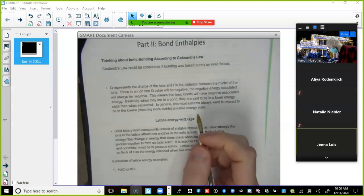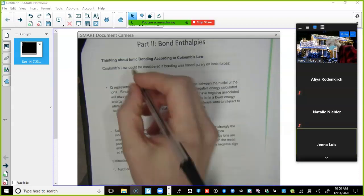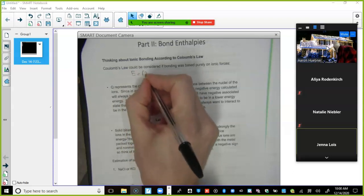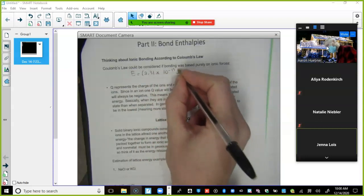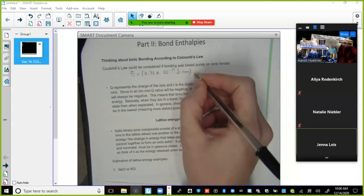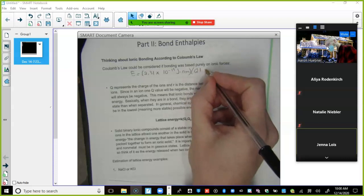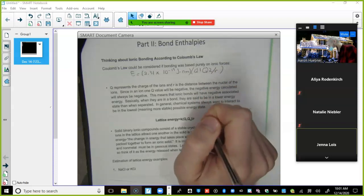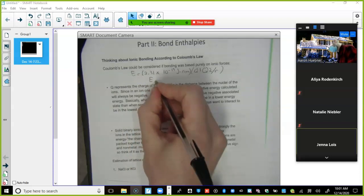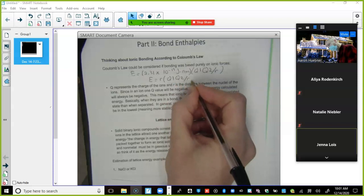So, writing this down. Coulomb's law could be considered if bonding was based purely on ionic forces. So we got energy equals 2.31 times 10 to the negative 19, and that's joules times nanometers. So that's our constant. We got Q1 times Q2 divided by R. Or you can write it as E equals K times Q1 times Q2 divided by R.